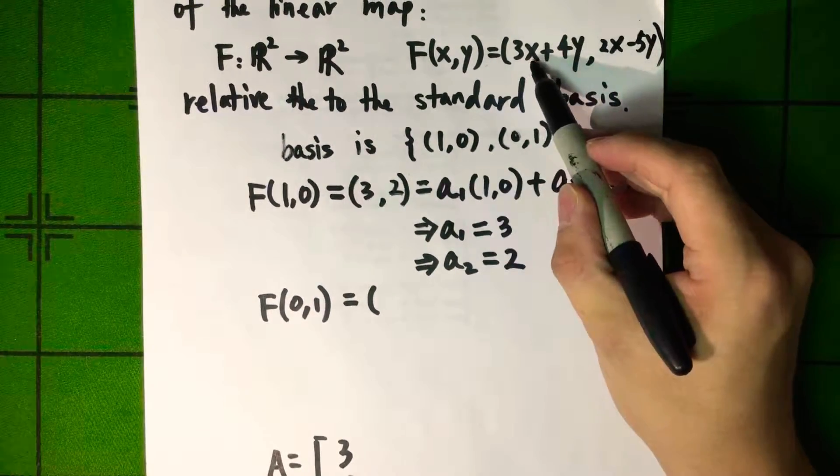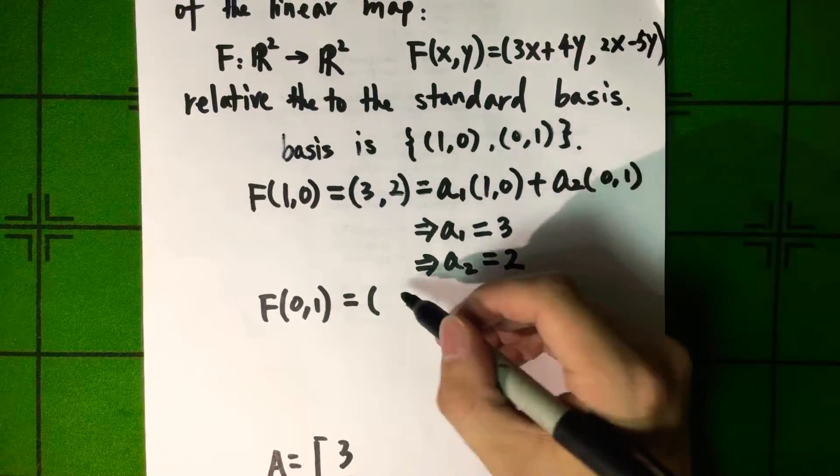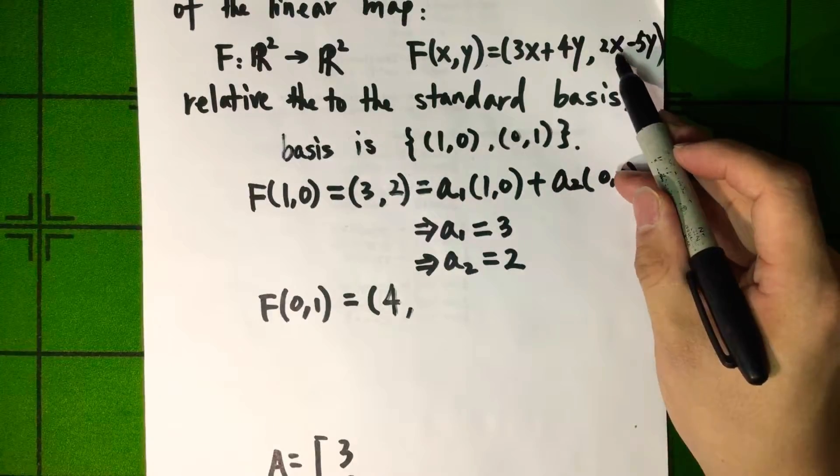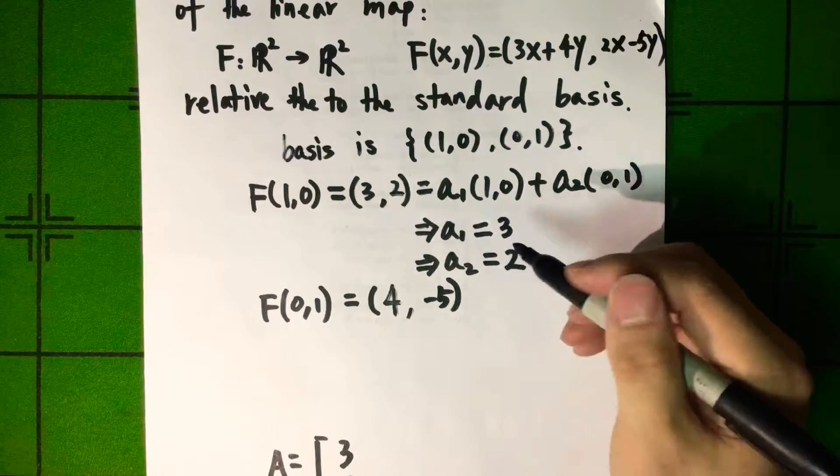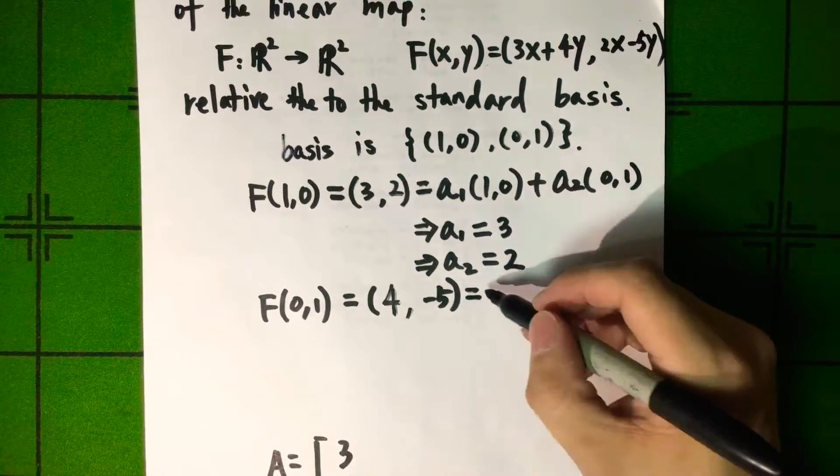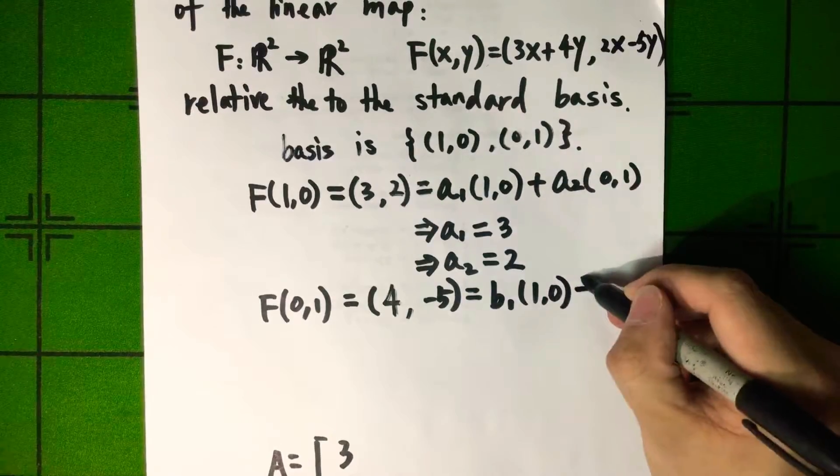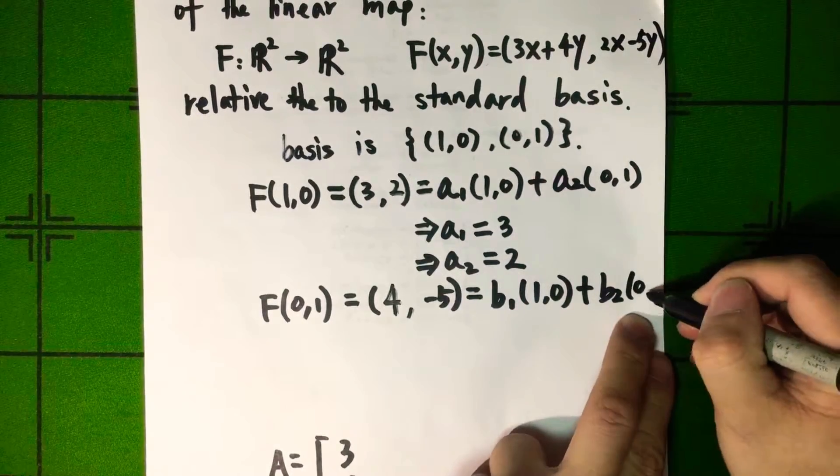So we get 4y, 4 times 1, so 4. And here 0 for x, 1 for y, we got minus 5. And this is going to be equal to B1 times (1, 0) plus B2 times (0, 1).